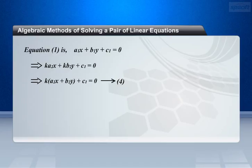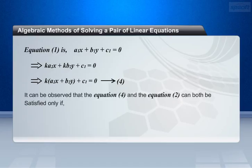Make it as equation 4. It can be observed that equation 4, that is k into a2 x plus b2 y plus c1 equals 0, and equation 2, a2 x plus b2 y plus c2 equals 0, can both be satisfied only if c1 equals k c2.